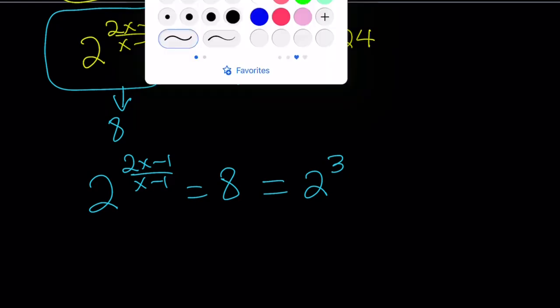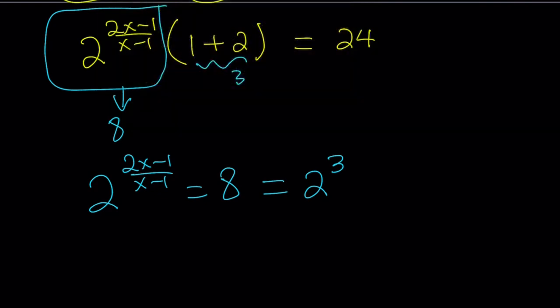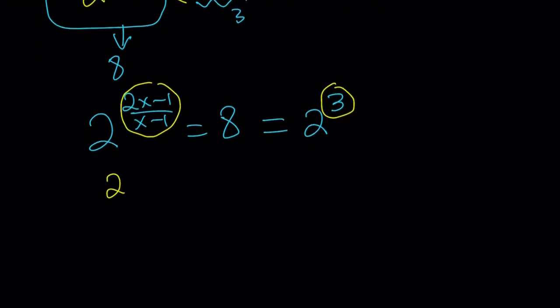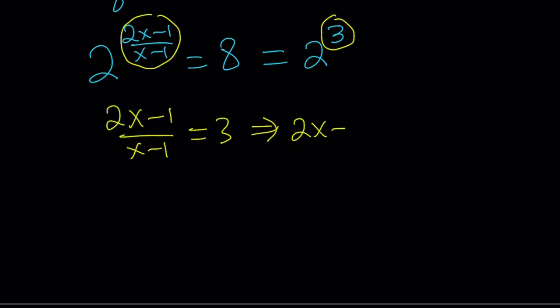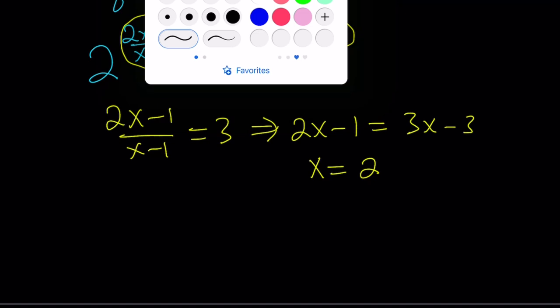Now we can go ahead and set these equal to each other. Set what? The exponents. Since we have the same base, it means that the exponents are also the same, which means 2x minus 1 over x minus 1 equals 3. And from here, if we cross multiply, we get 2x minus 1 equals 3x minus 3. And by solving the simple equation, x equals 2 is going to be the answer.